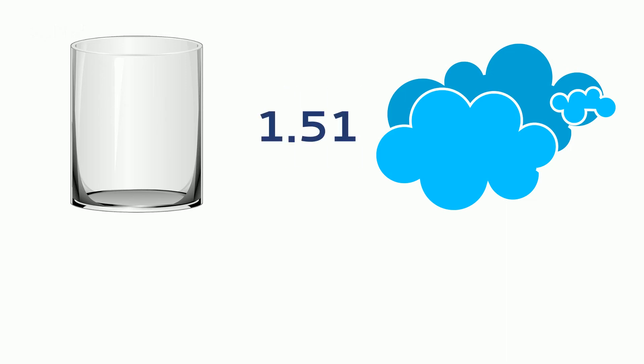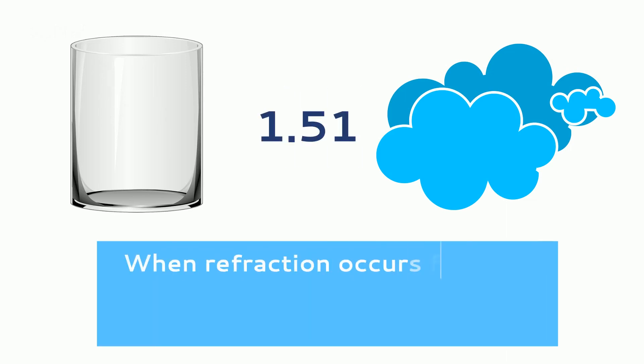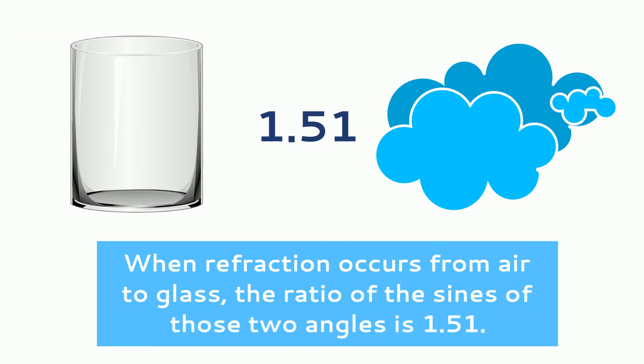For example, the refractive index of glass with respect to air is 1.51. This means that when refraction occurs from air to glass, the ratio of the sines of those two angles is 1.51.